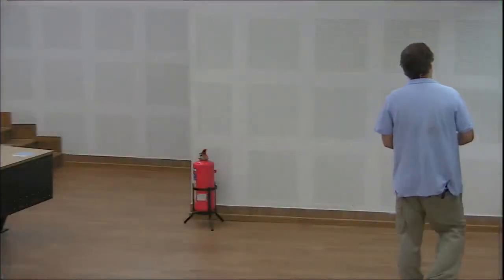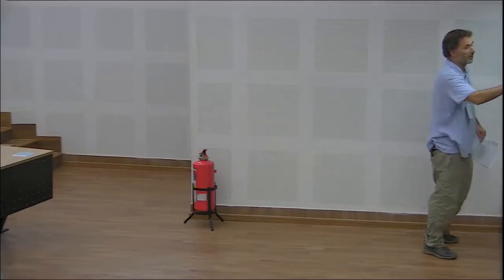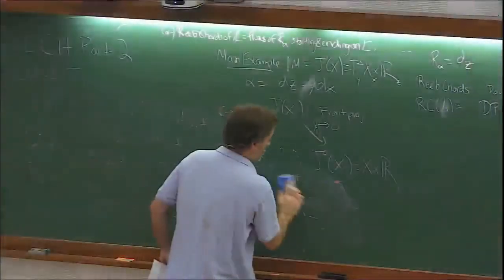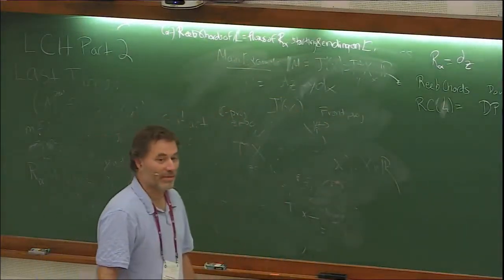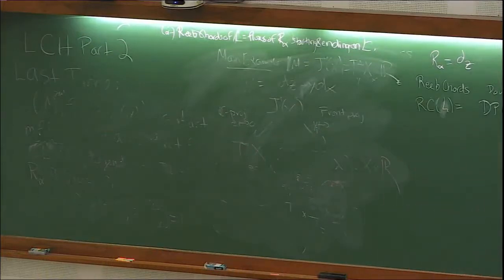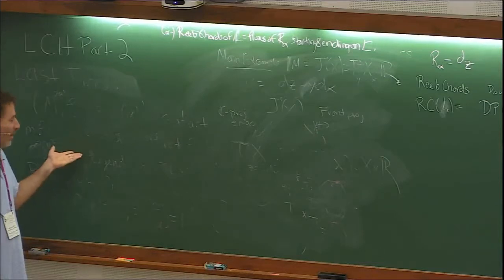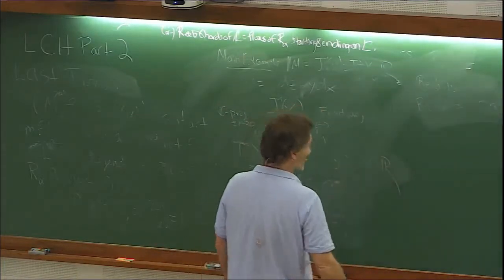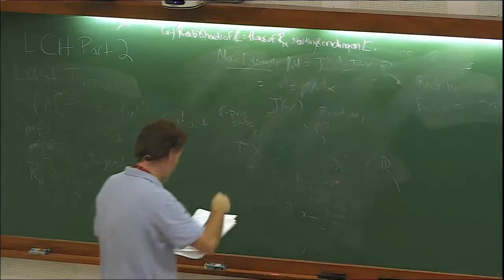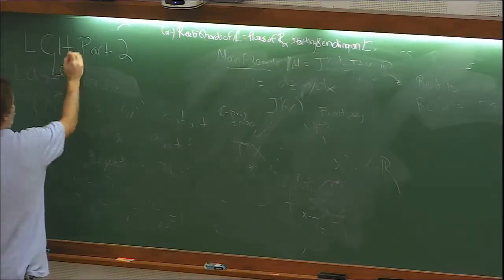So I'm still trying to talk about what the grading is. Now we can get to this definition. Let the grading of A be the Morse index of this critical point, plus the number of down cusps D of alpha, minus the number of up cusps, minus one.